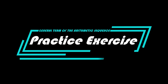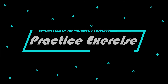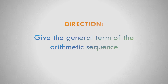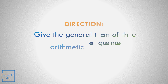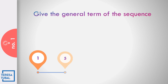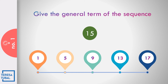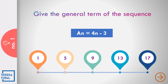Let us practice what you have learned. Direction: give the general term of the arithmetic sequence. Question number 1 in the sequence 1, 5, 9, 13, and 17. What is the general term of this arithmetic sequence? I give you 15 seconds. The answer is a sub n is equal to 4n minus 3.